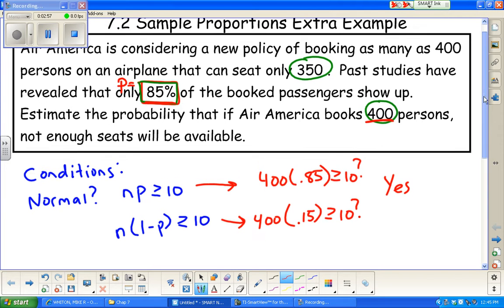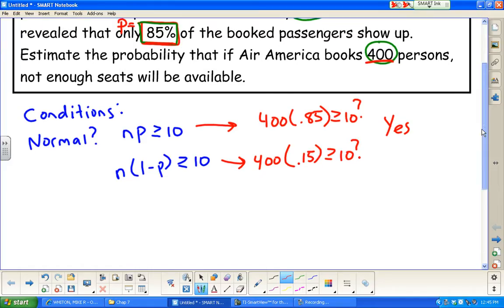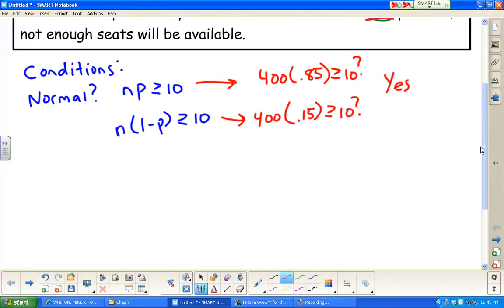So we know it's normal, a bell-shaped curve. Now, do we know the mean, standard deviation, anything like that? We know it's normal, and we do know the mean. From past experience, they said it's 0.85, or 85%. Let's see, can we get a standard deviation?